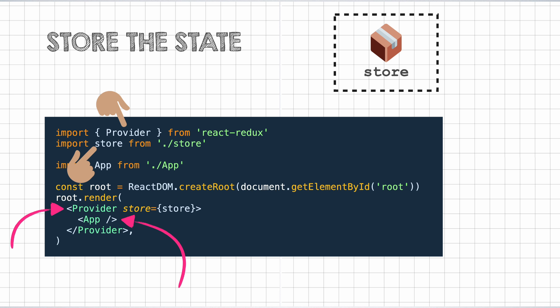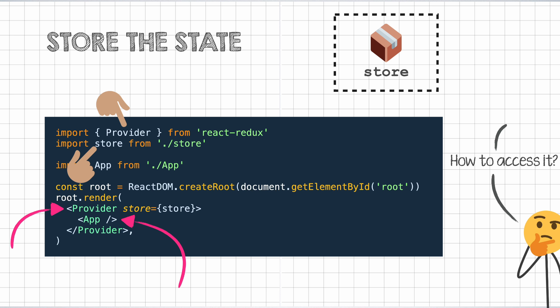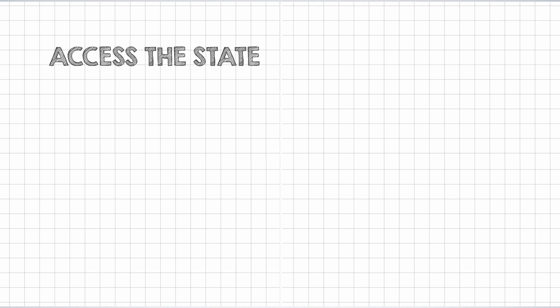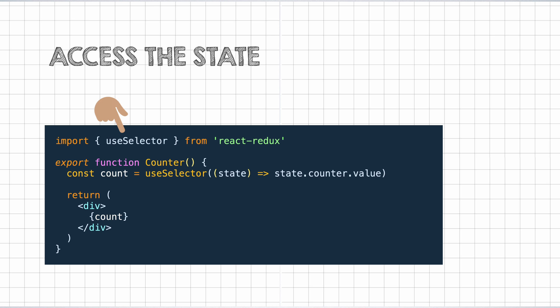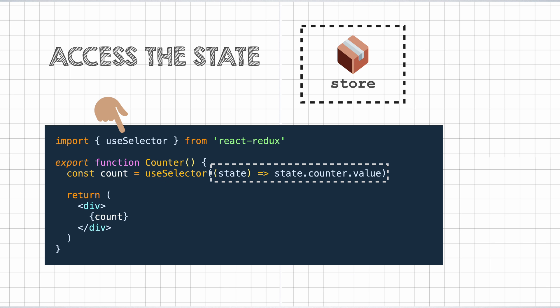Let us now see how this store can be accessed from within the app. Now that we have the whole state in the form of the store, we can use a hook to access it. The Redux library provides us the useSelector hook for this purpose. We can pass a selector function to it like so. Redux then gets the appropriate value from the store and also makes sure that whenever the value from the store changes, this component will be re-rendered with the latest value.